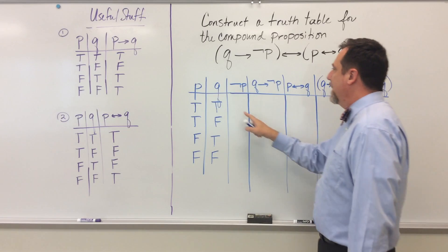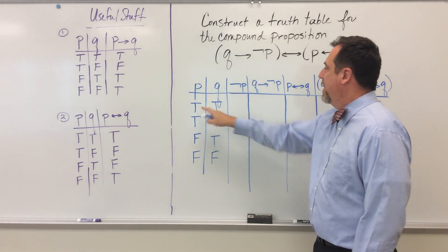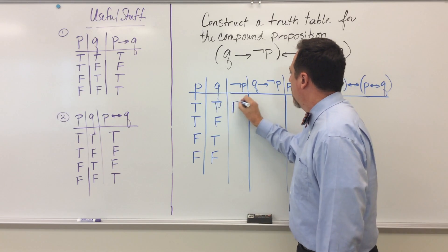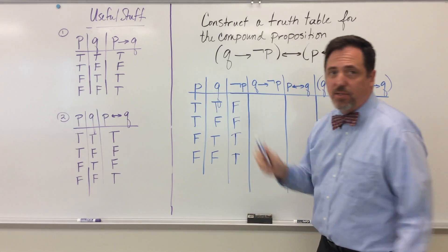Okay, so the first column is really easy. All I have to do is negate P. Well, if P is true, then of course not P is false. And if P is false, not P is true. That's super easy.